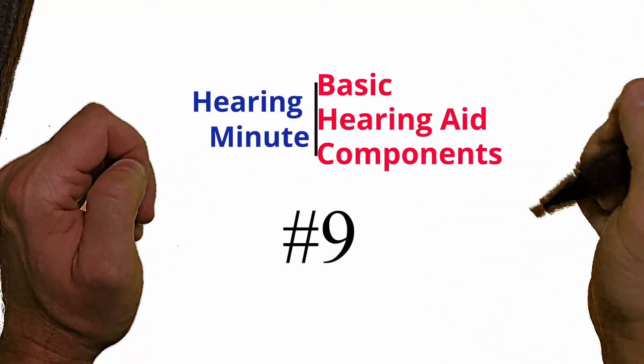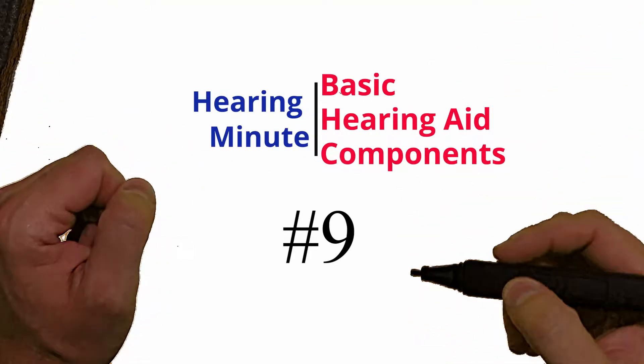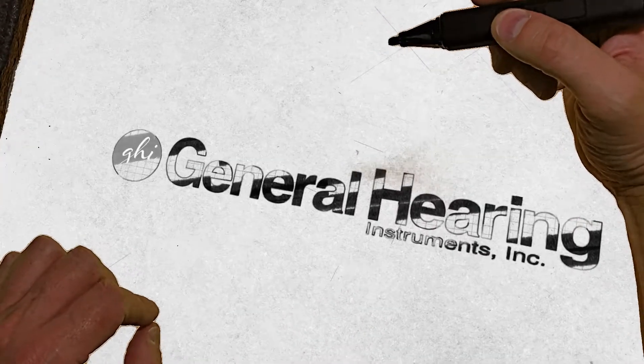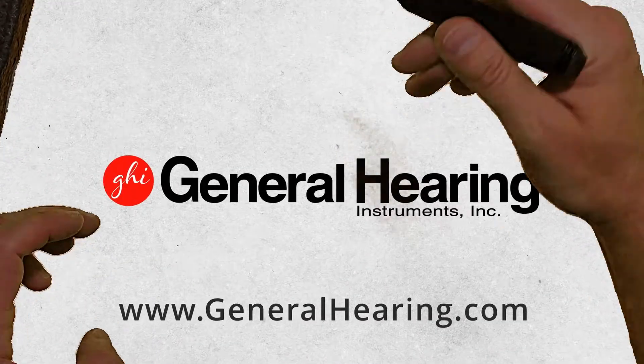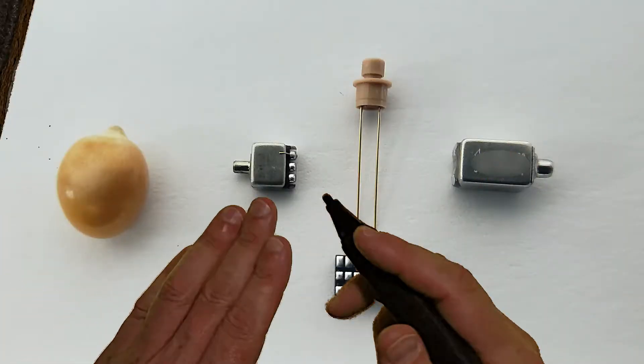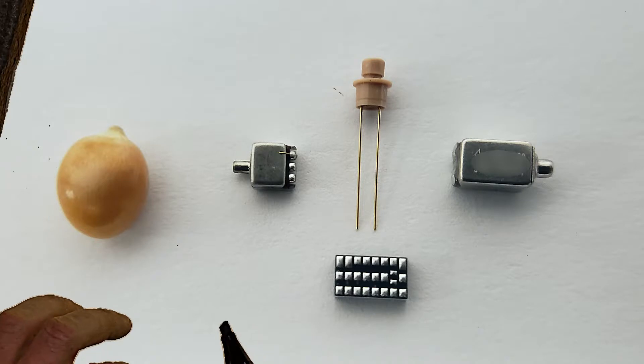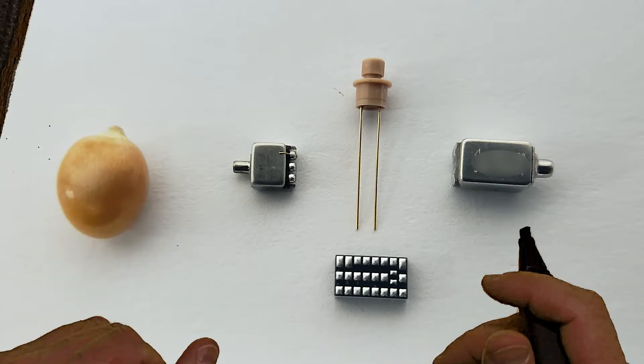Today we're going to be discussing basic hearing aid components. To give you an idea how small the components of a hearing aid are, here's a kernel of popcorn. That gives you a reference of how tiny these components are.